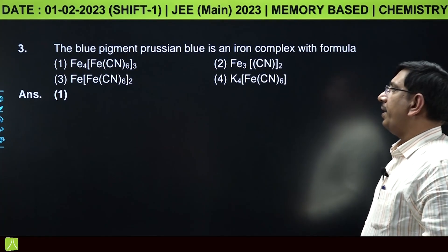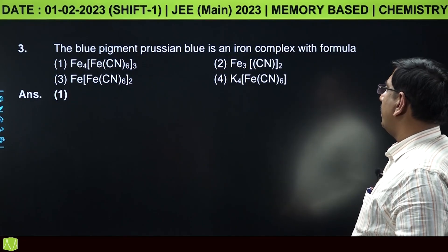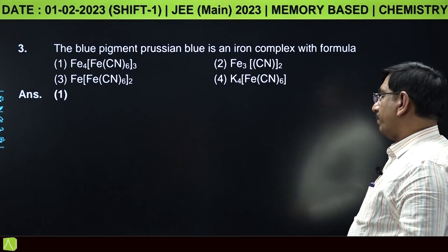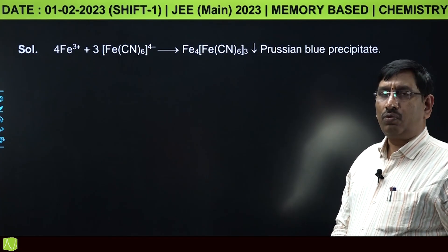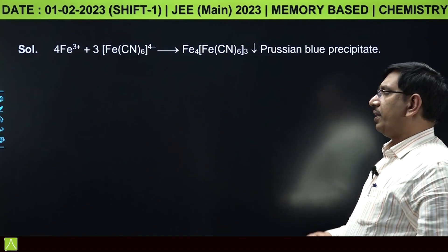The blue pigment Prussian blue is an iron complex. To identify Fe3+, we use qualitative analysis with this reaction.